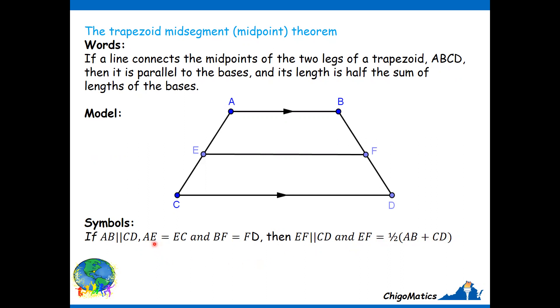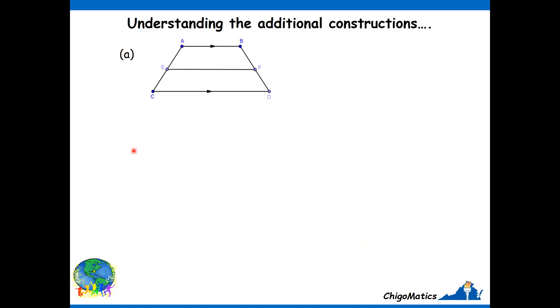Note that AE equals EC means E is the midpoint. BF equals FD means F is the midpoint of BD. For us to demonstrate this theorem, we have to look at what we are given and try to think how best we can come up with useful constructions.